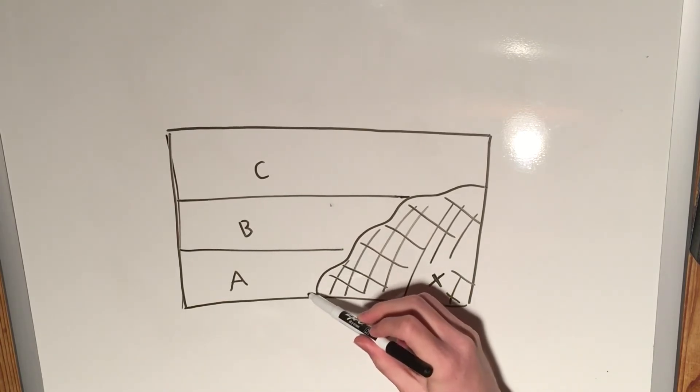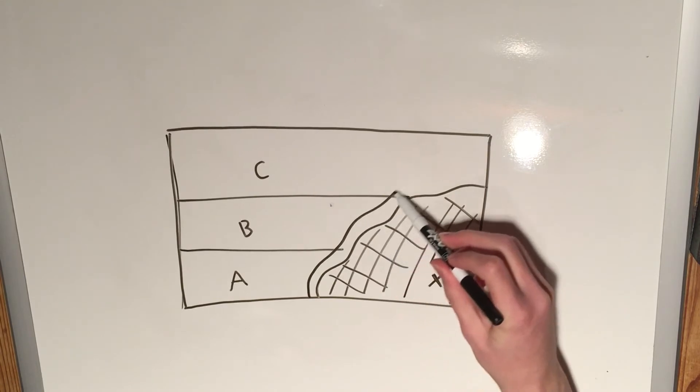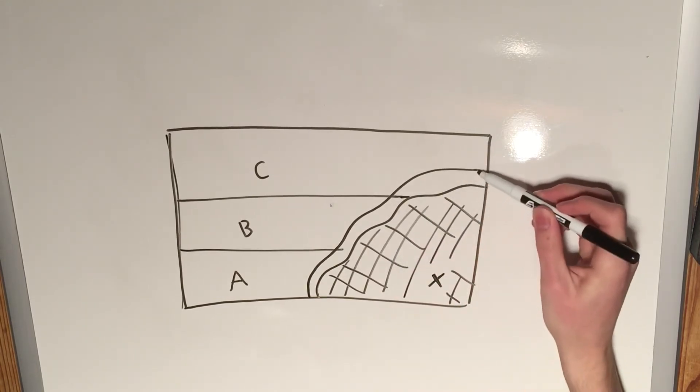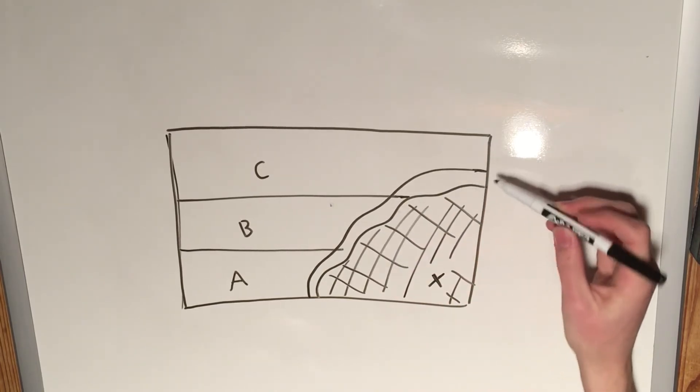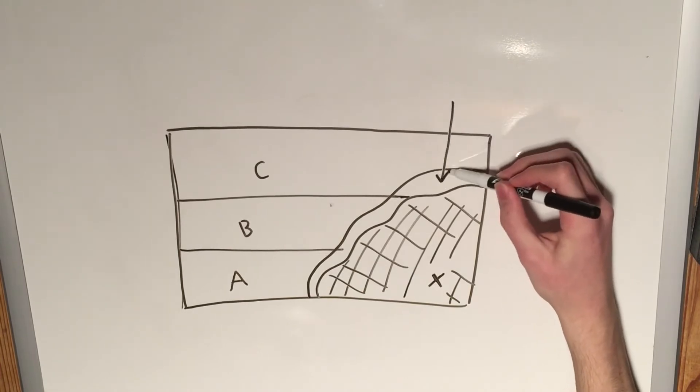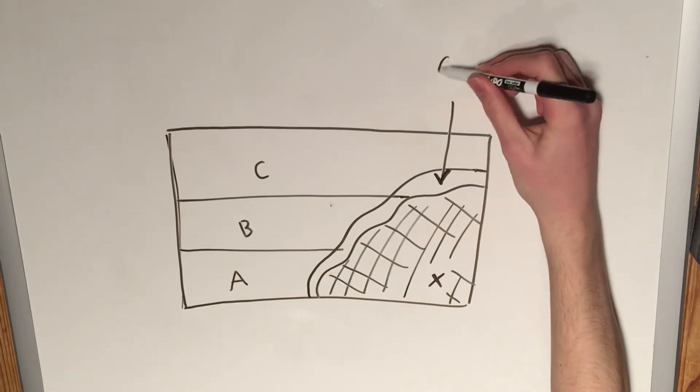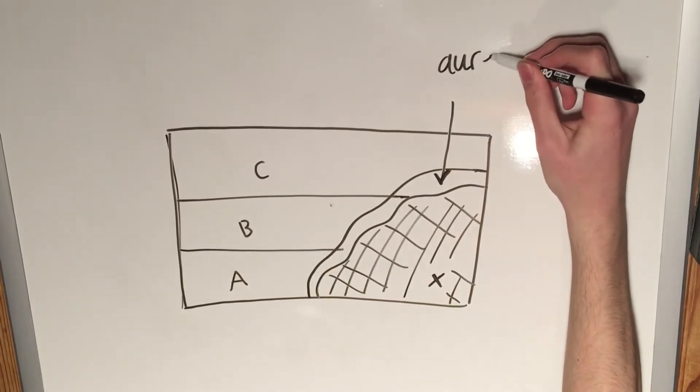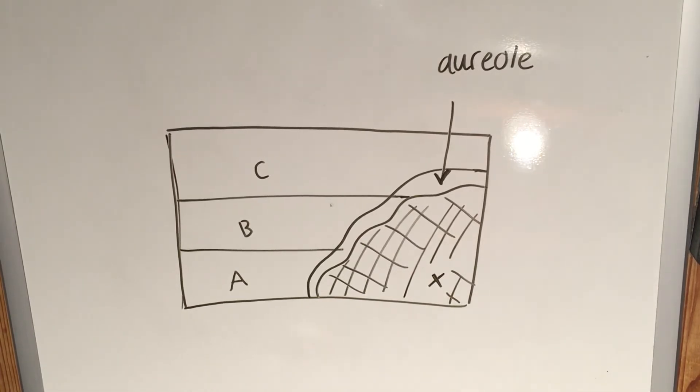And that would be that what actually would form would be a layer right here, a new layer of rock. And we would call this, and this is a general term, this is called an aureole.